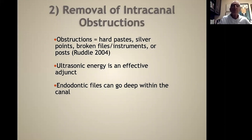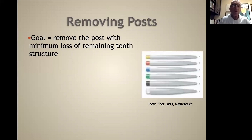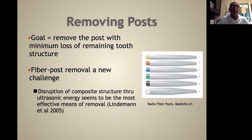We can remove intracanal obstructions such as hard paste, silver points, broken files, instruments, and posts. Ultrasonic energy is an effective agent and endodontic files can go deep within the canal. The goal of post removal is to remove posts with minimum loss of remaining tooth structure. Before ultrasonics, it was very difficult to remove posts without destroying tooth structure. Fiber posts have become very favorable in restoring endodontically treated teeth, and fiber post removal is a new challenge. Disruption of the composite structure through ultrasonic energy seems to be the most effective means of removal.